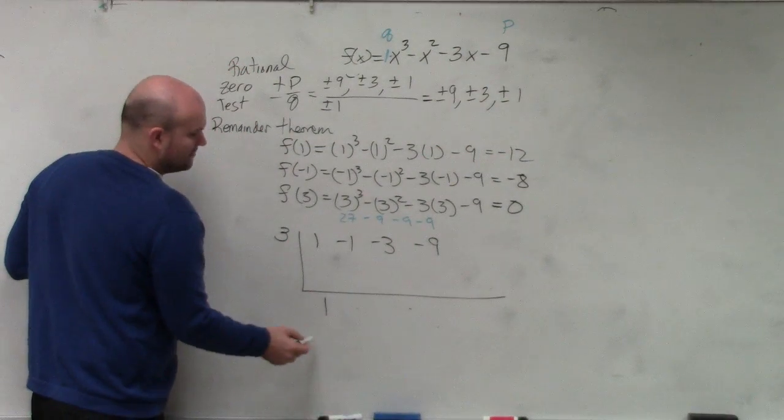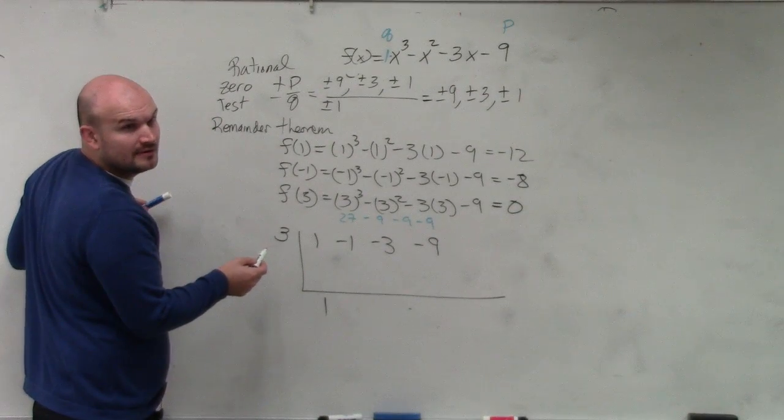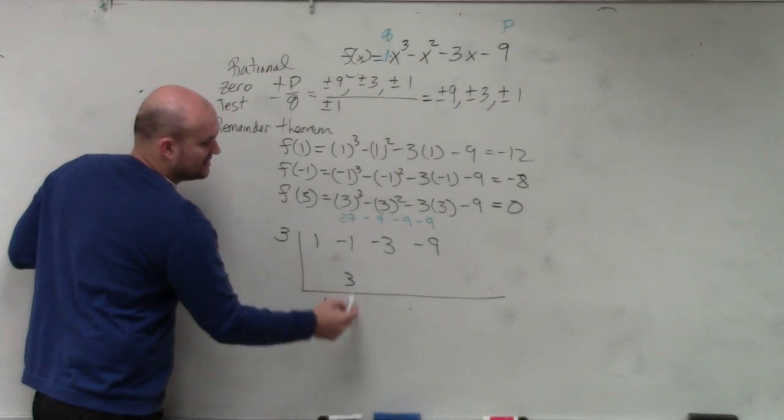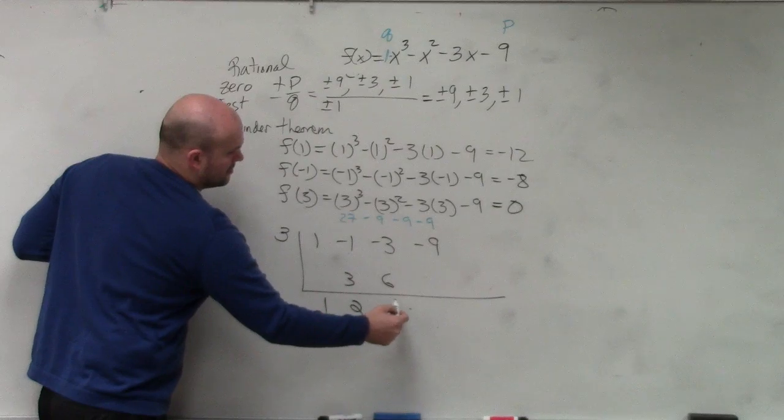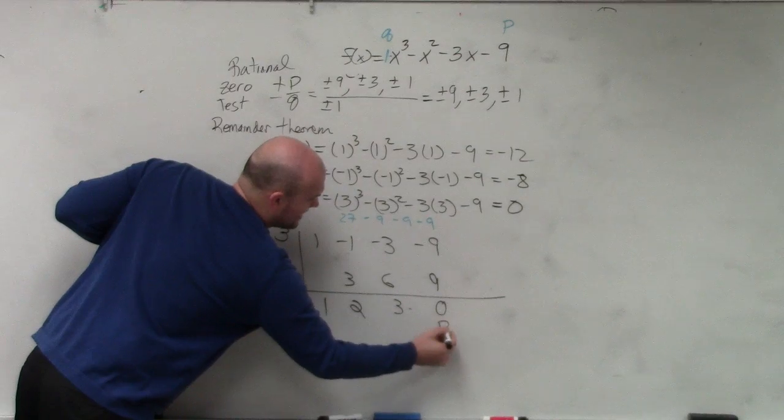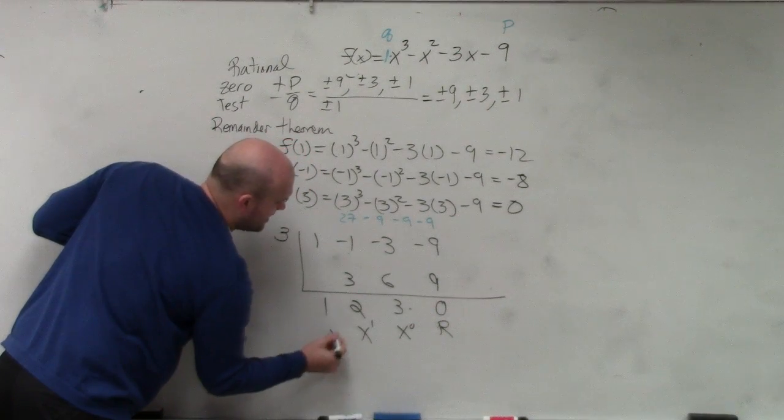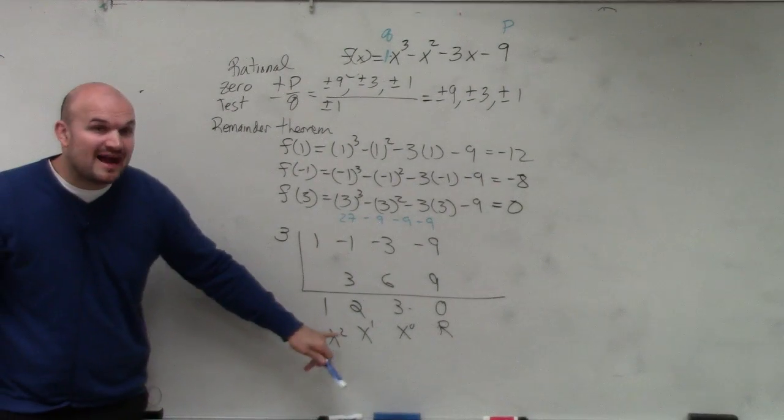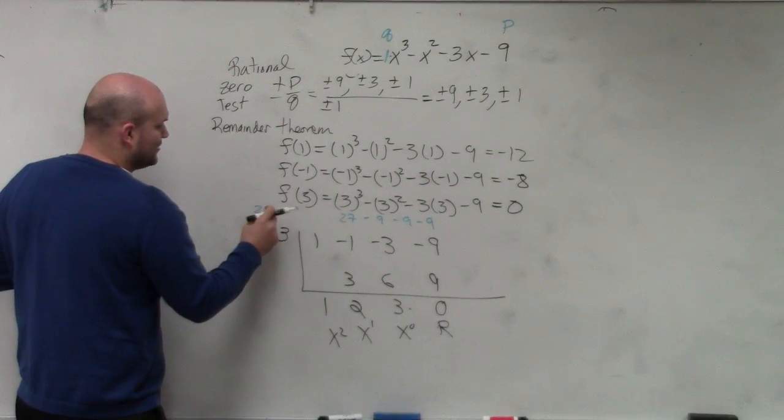First thing, bring down the 1. 1 times 3 is, and remember, what's the remainder for this one going to be? It's going to be 0, right? So I know if I don't get 0 then I did something wrong. Cool, so that's my remainder, constant, linear, quadratic. So now that's my other factor. If 3 is a zero, what is my other factor? If 3 is a zero, what's the factor? x minus 3.